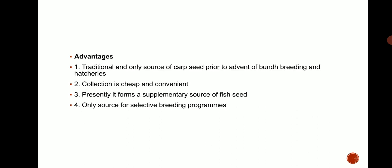Traditionally, the only source of carp seed prior to the advent of bundle breeding and hatcheries. Collection of spawn is convenient. Presently it forms a supplementary source of fish seed and the only source for selective breeding programs.